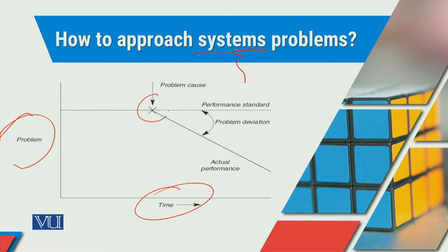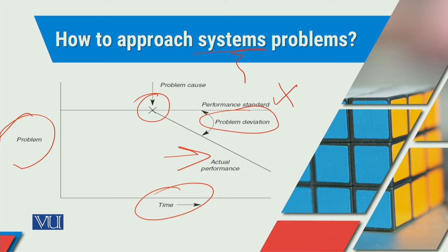Sometimes at a particular point we have the urgency to come up with a solution. Here agar koi aisi problem occur ker rahi hai which is to be avoided or corrected, then hume expectation aur actual dono ki zaroorat hogi. Because us surat mein hum joh performance standards hain wou achieve nahin kar pa rahe. Hamein yeh dekhna padega ke performance standard aur actual performance ke dhermiyan joh deviation hai wou kis qadar hai aur us deviation ke mutabiq hume kun sa course of action use karna hai.